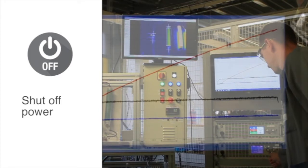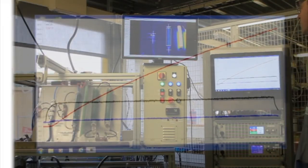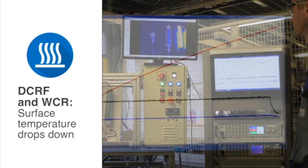Now we shut off the power. The temperature of the DCRF immediately drops down and it takes only a few seconds.